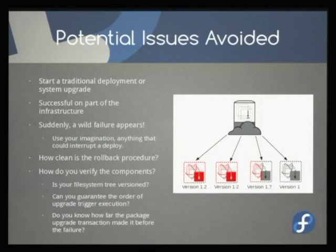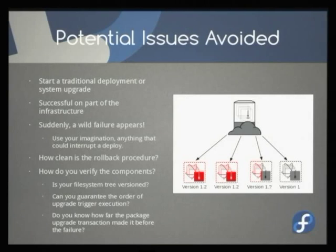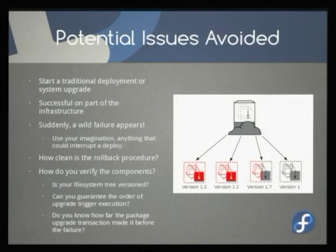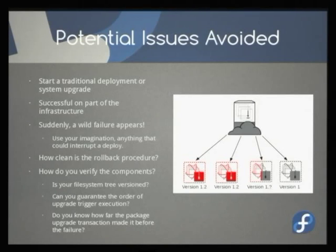Now, what happens when something breaks on one of the nodes? Think of the wildest doomsday scenario: somebody walked into the data center and kicked the power cord out. Something crashed. Somebody put a really bad custom RPM trigger in one of the packages that your infrastructure team runs. A new person commits to master on accident and that gets packaged and rolled out as part of your deployment automation. How clean is your rollback procedure? How do you verify your components? How do you know what state your file system or kernel is in? Let's say the power cable got kicked out in the middle of a kernel update while generating the init RAM FS.